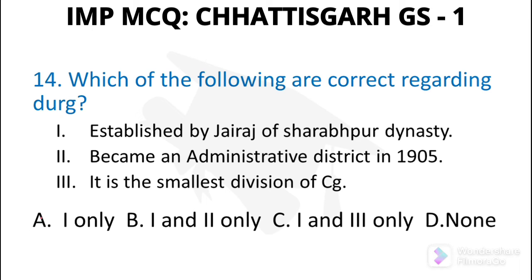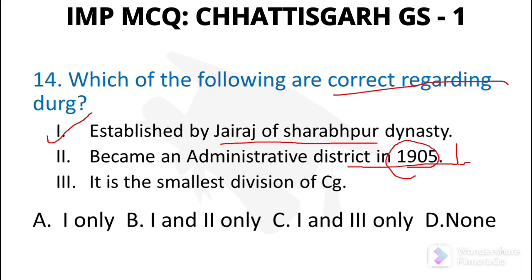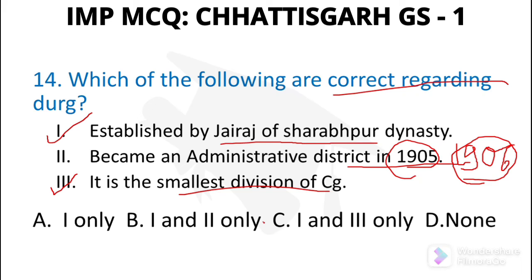Question number 14: Which of the following are correct regarding Durg? It was established by Jayaraj of Sharappur dynasty. It became an administrative district in 1906, not 1905. It is the smallest division of Chhattisgarh. So statements 1 and 3 are correct — option number C.